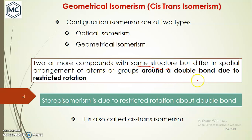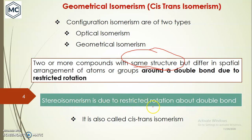This spatial difference arises because of a double bond due to restricted rotation. Two or more compounds will have the same structure but differing spatial orientation around a double bond due to restricted rotation. So it is a type of stereo isomerism arising due to restricted rotation about a double bond.